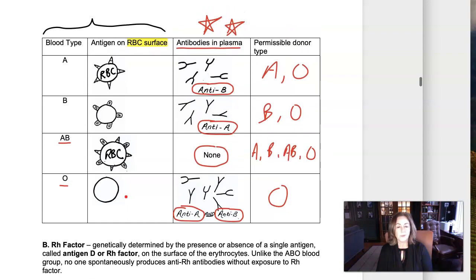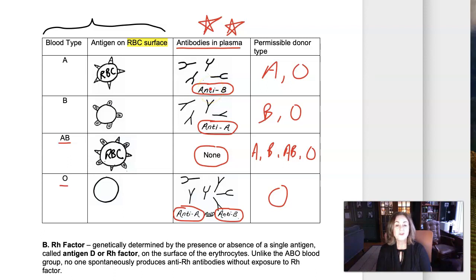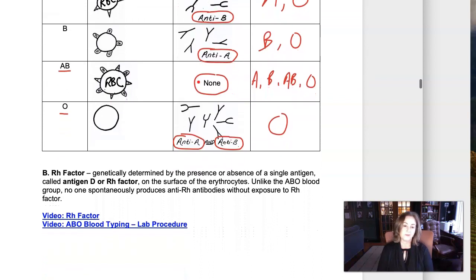To contrast, if you gave type A blood a type B transfusion, they're already producing anti-B. Because they're now threatened with antigen B, they're going to keep making more and more anti-B — and we can't stop that production. They'll make way too much anti-B and be in a crisis situation. This is not a finite reaction; it's being continuously produced by the recipient with no medication to bring it to an end.